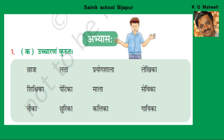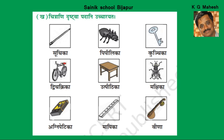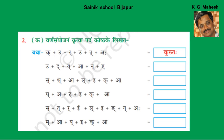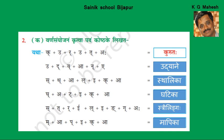We have completed the first exercise, Uchcharanam Kuruta — that means clear pronunciation. The second exercise was Chitraani Dhrishtva Padani Uchchareta — look at the picture and spell the words. Next, Varna Samyojanam Kurutva Padam Koshtake Likatha — joining these letters, you should make a framed word. This one we have also completed.